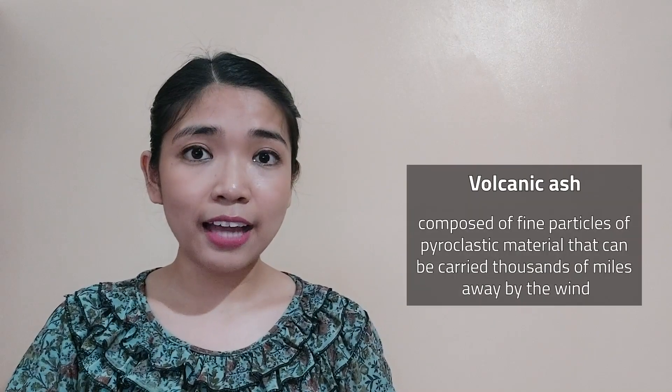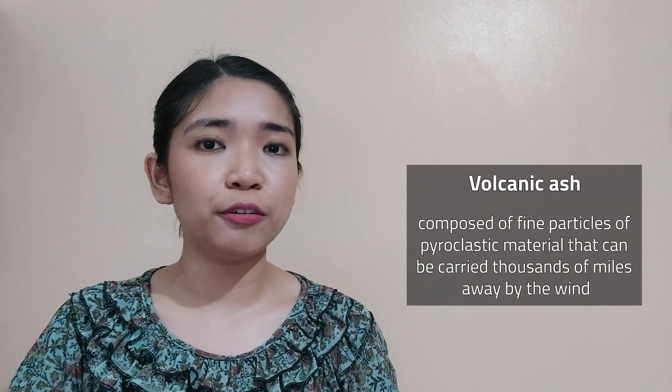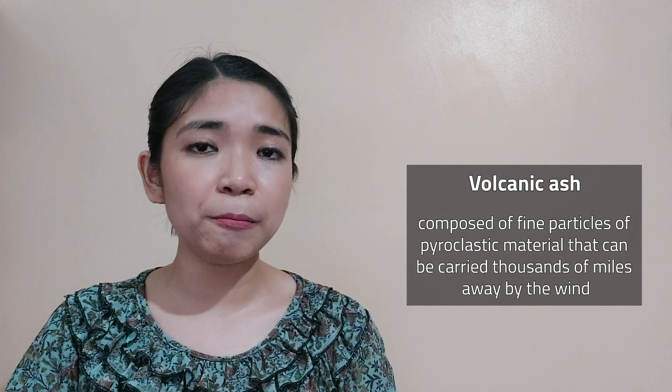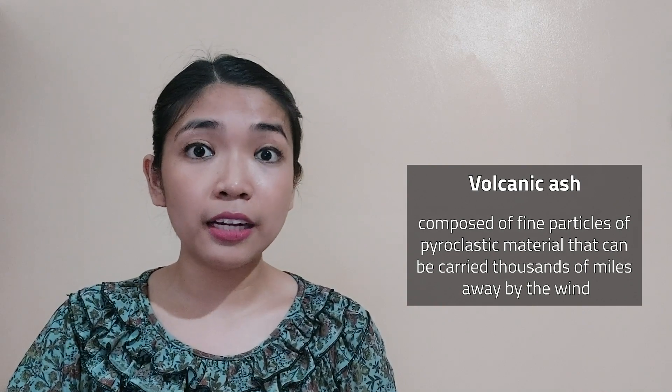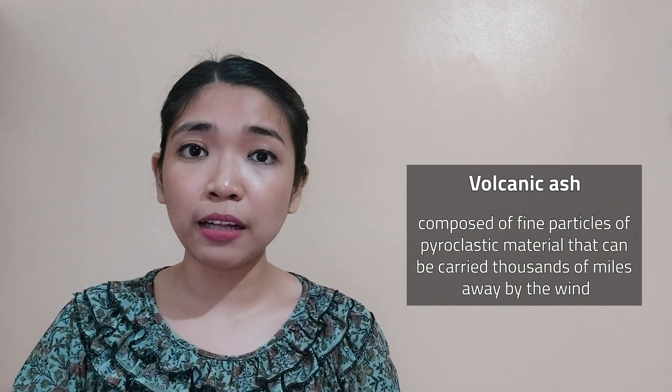Volcanic ash is composed of fine particles of pyroclastic material that can be carried thousands of miles away by the wind. This can cause ashfall even in areas far away from the eruption site. A huge volume of volcanic ash in the atmosphere can also affect the weather as well as the climate.